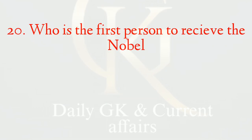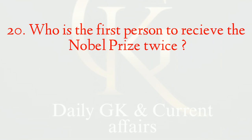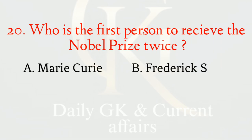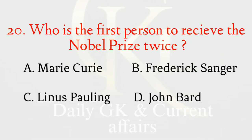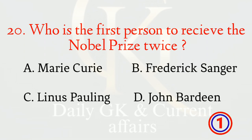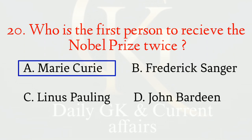Who is the first person to receive the Nobel Prize twice? The correct option is a: Marie Curie.